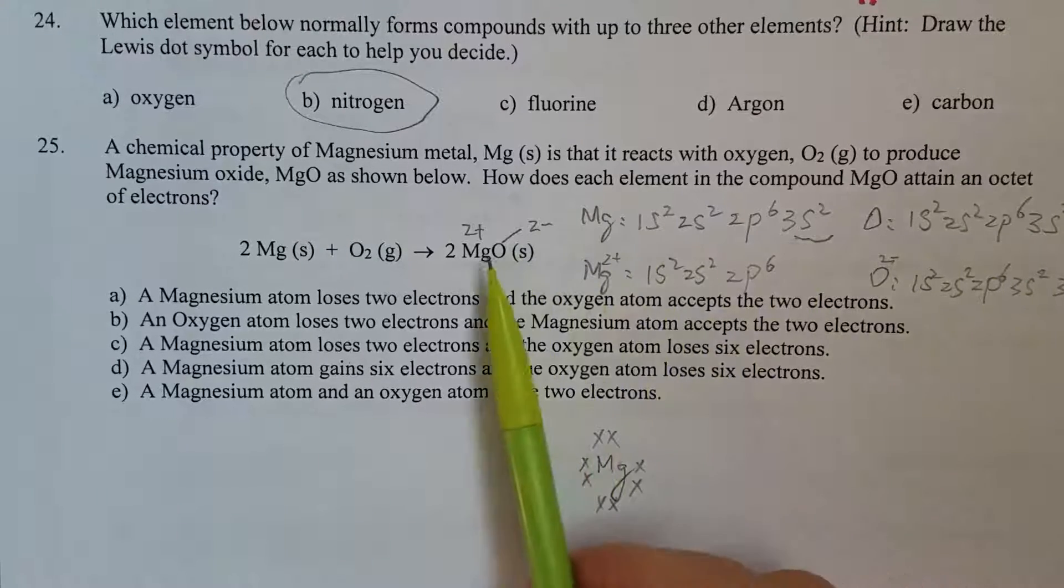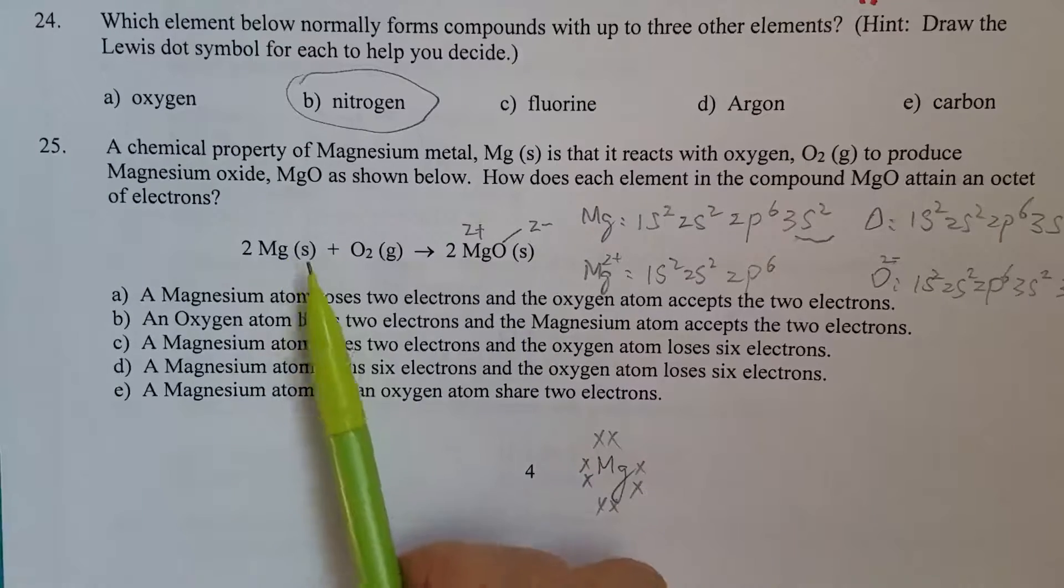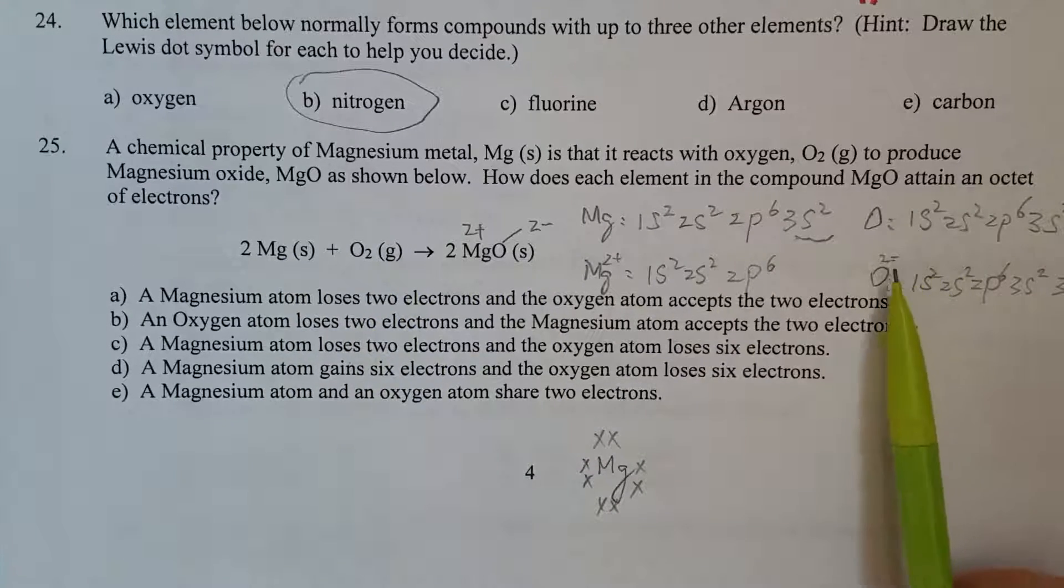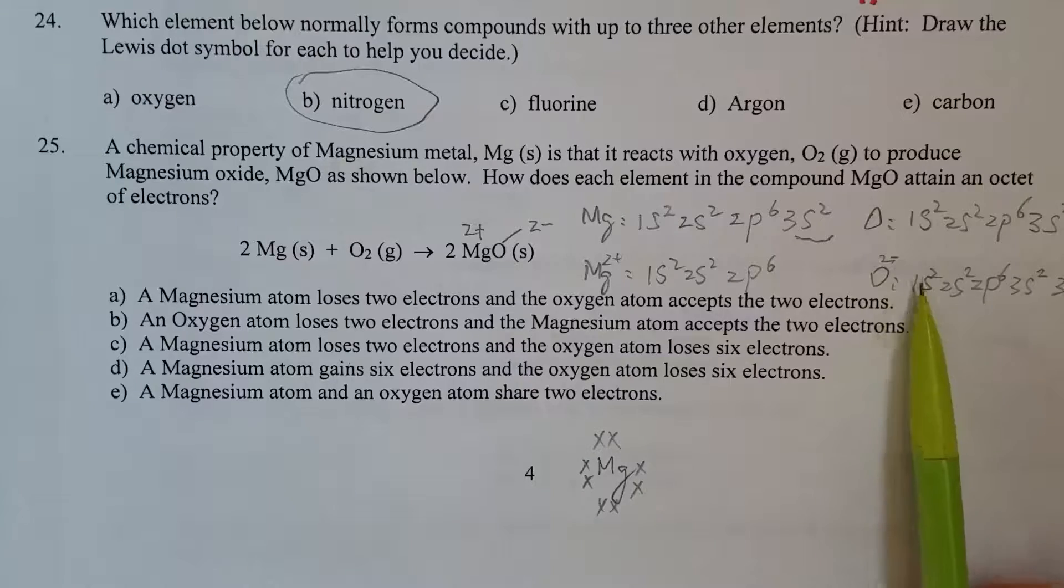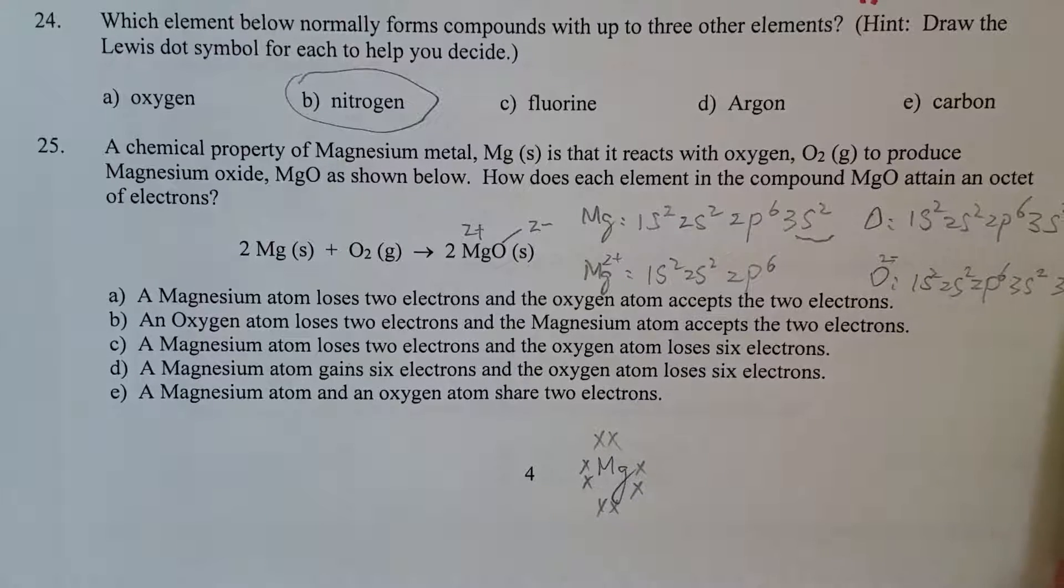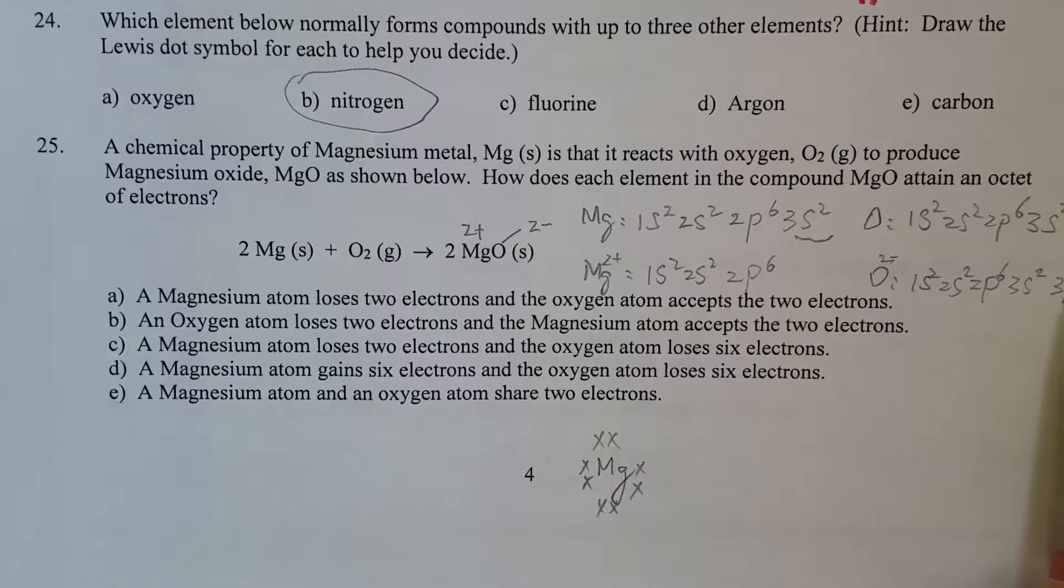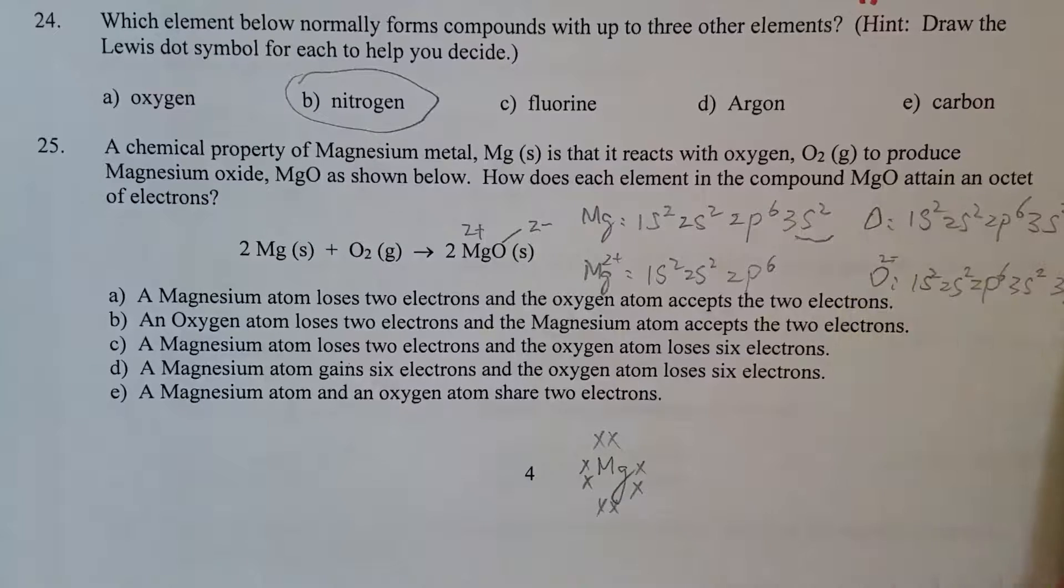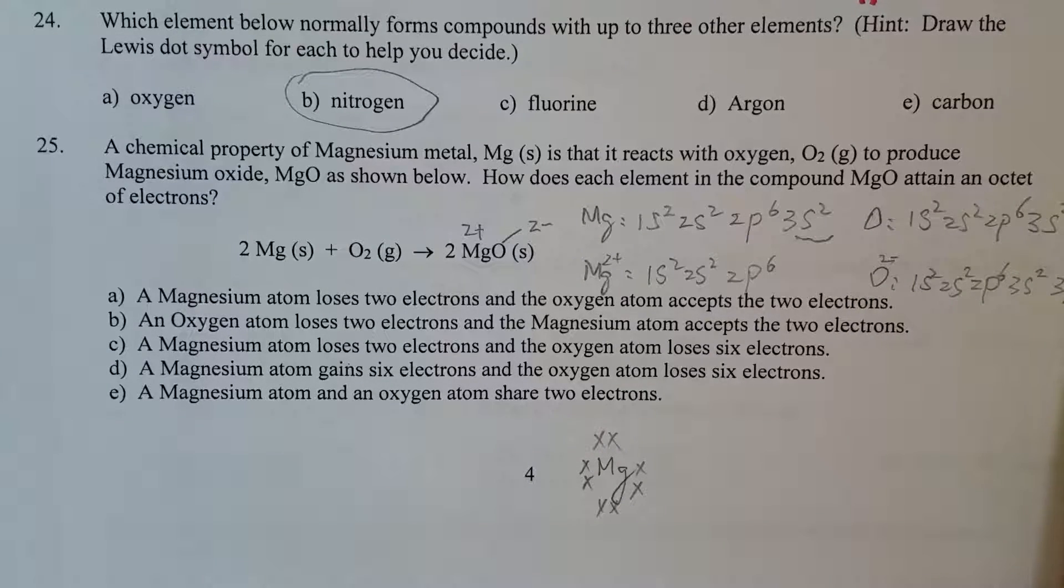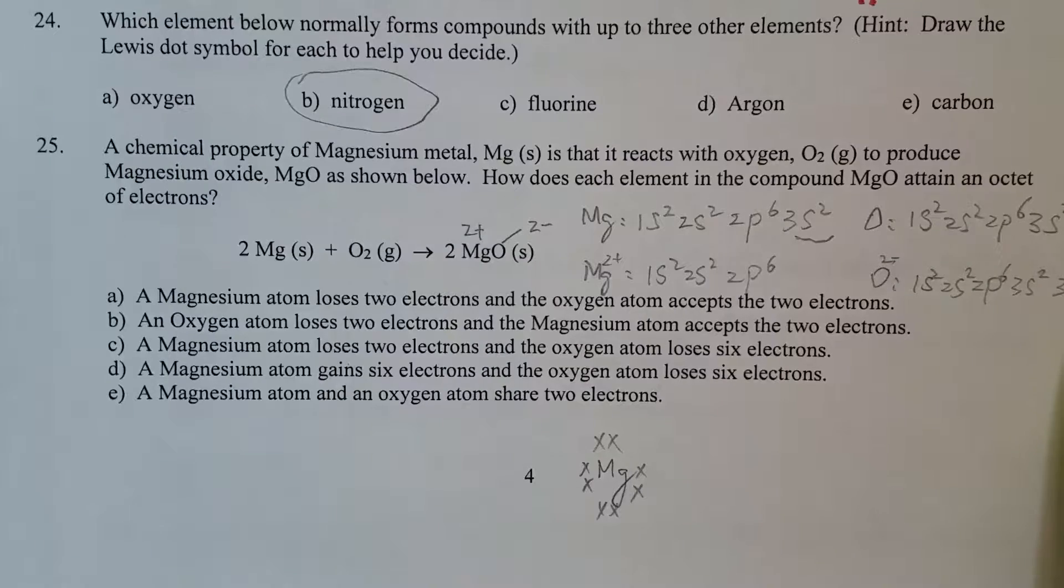The two electrons lost by magnesium were obtained by oxygen. So therefore, the oxide electron configuration should have two more electrons than the oxygen atom. So 2p4 plus 2 becomes 2p6.